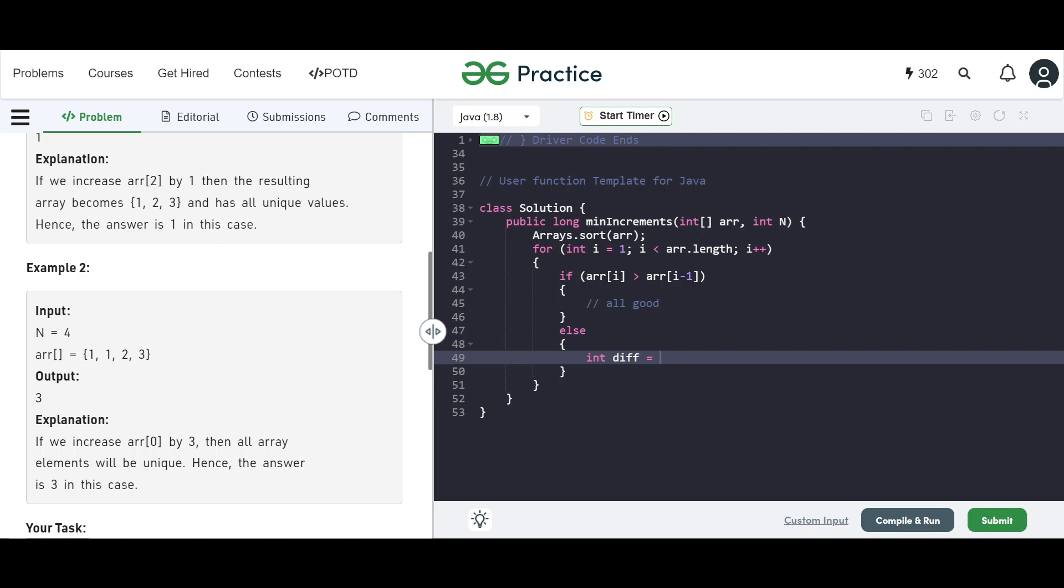So now that's why we get the diff. So either it will be equal or it could even be lesser. So diff is equals to array[i-1] - array[i].